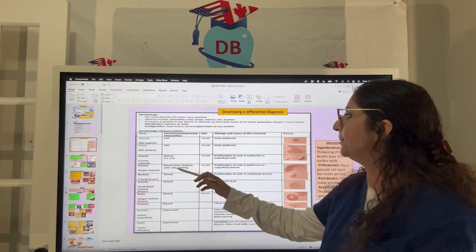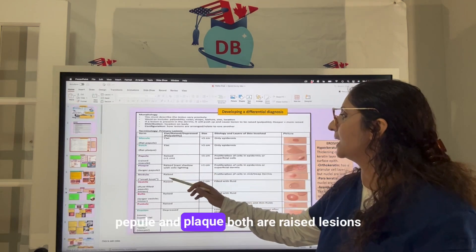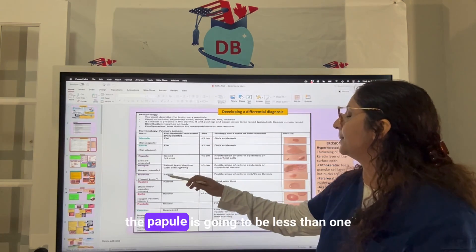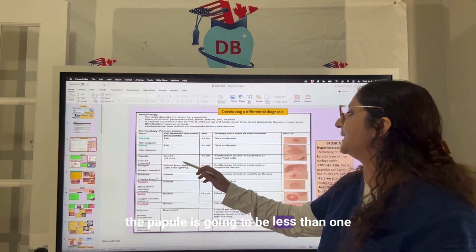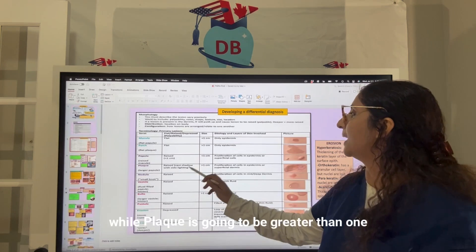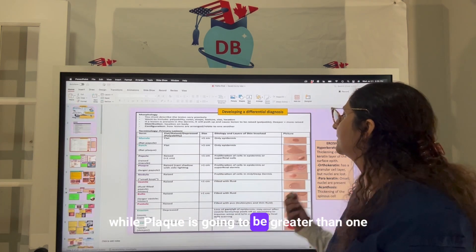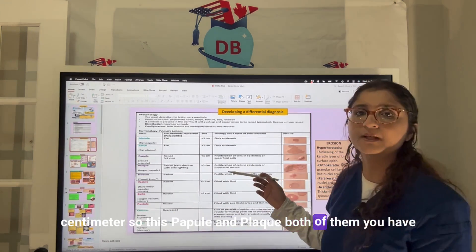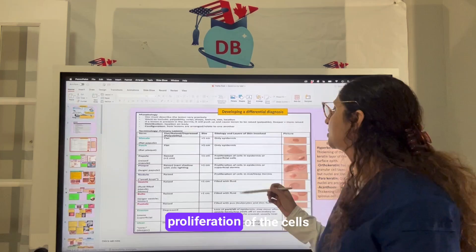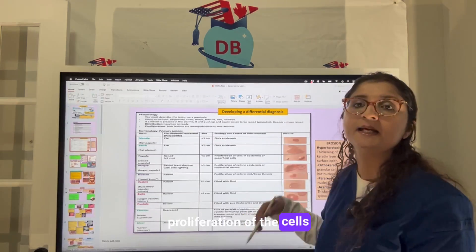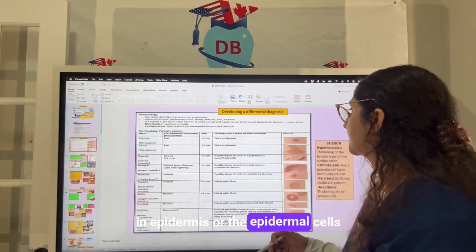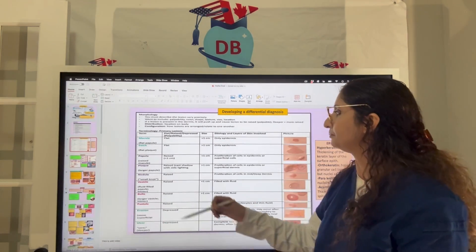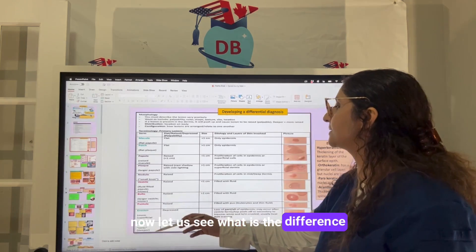Now, what is the difference between a papule and a plaque? Both are raised lesions. Again, a papule is going to be less than one centimeter, while a plaque is greater than one centimeter. In both papule and plaque, you have proliferation of cells in the epidermis or epidermal cells in the superficial dermis.